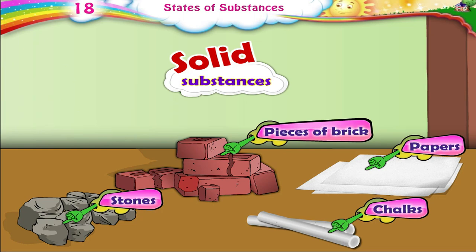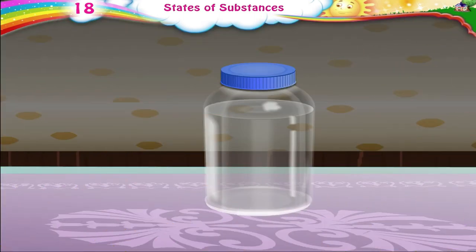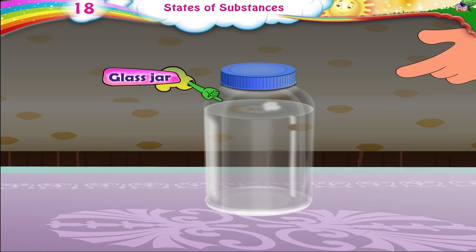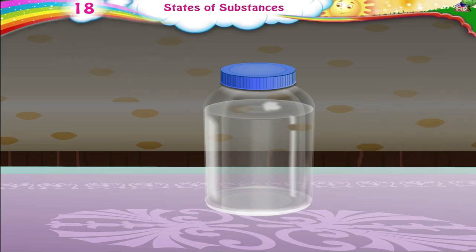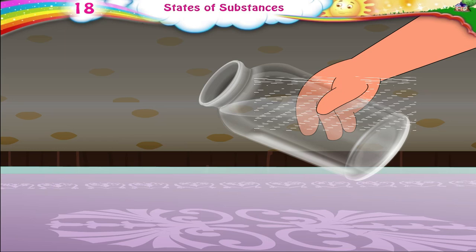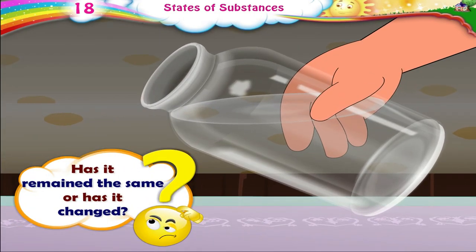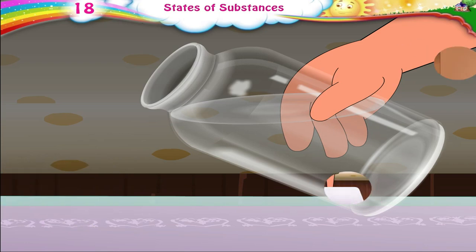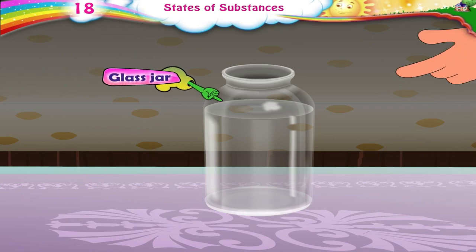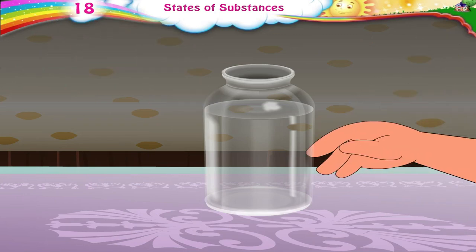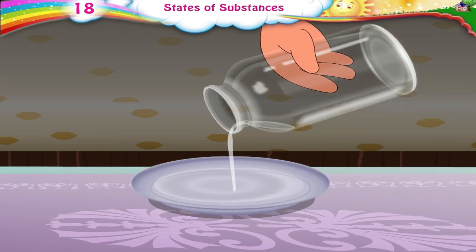Solids stay as you keep them. They can be placed in a heap. Now children, look at this glass jar. I have filled it partly with water. Observe the shape as I tilt it slightly and then a little more. What has happened to the shape of the water? Has it remained the same or has it changed? It has changed. When a glass jar is partially filled with water and then tilted, the shape of the water changes. I will now pour some water into this dish.